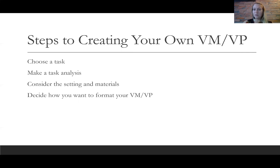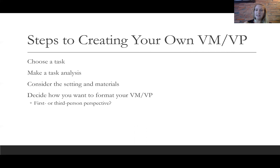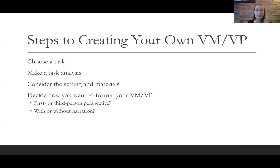Then you want to decide how to format your video modeling or video prompting intervention. One thing to consider is filming from a first or third person perspective. The clothes-washing video was first person. For third person, you would need a friend, colleague, or tripod to film your whole body doing the skill. Also decide whether you want narration or not. The example had narration of the task analysis steps read aloud. Based on research, videos are effective with and without narration — it really depends on the student, as some appreciate verbal prompting while others find it distracting.